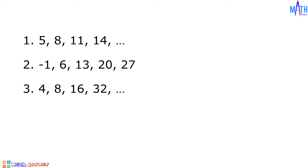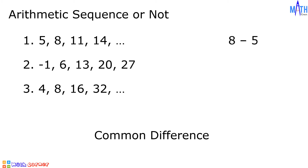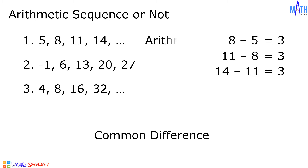Next, let us determine whether each of the following sequences is an arithmetic sequence or not. A sequence is an arithmetic sequence if there is a common difference. To determine the common difference, let us subtract any two consecutive terms. In number 1, 8 minus 5 is equal to 3, 11 minus 8 is equal to 3, and 14 minus 11 is also equal to 3. Since there is a common difference, 5, 8, 11, 14 is an arithmetic sequence.